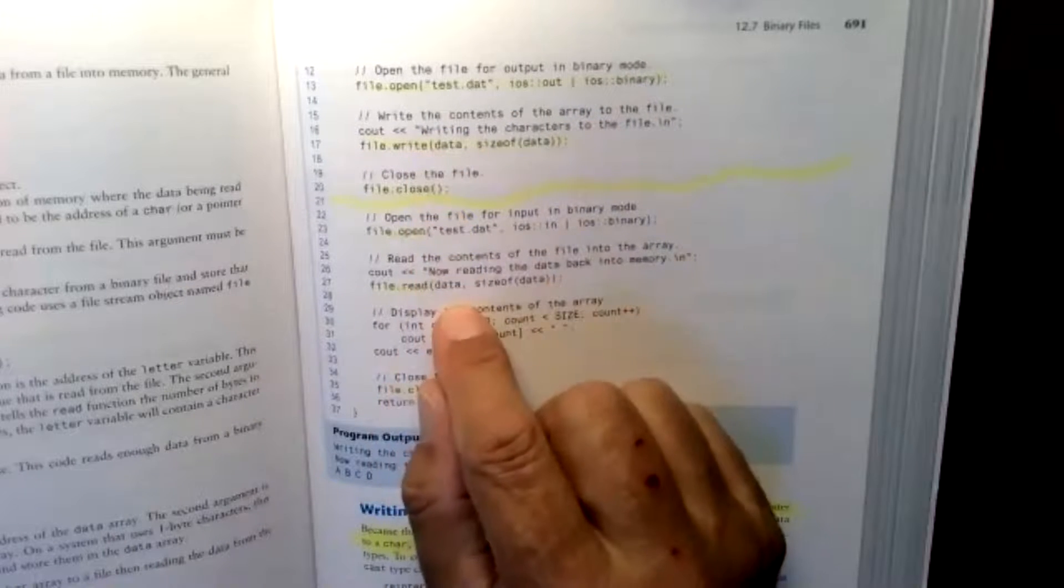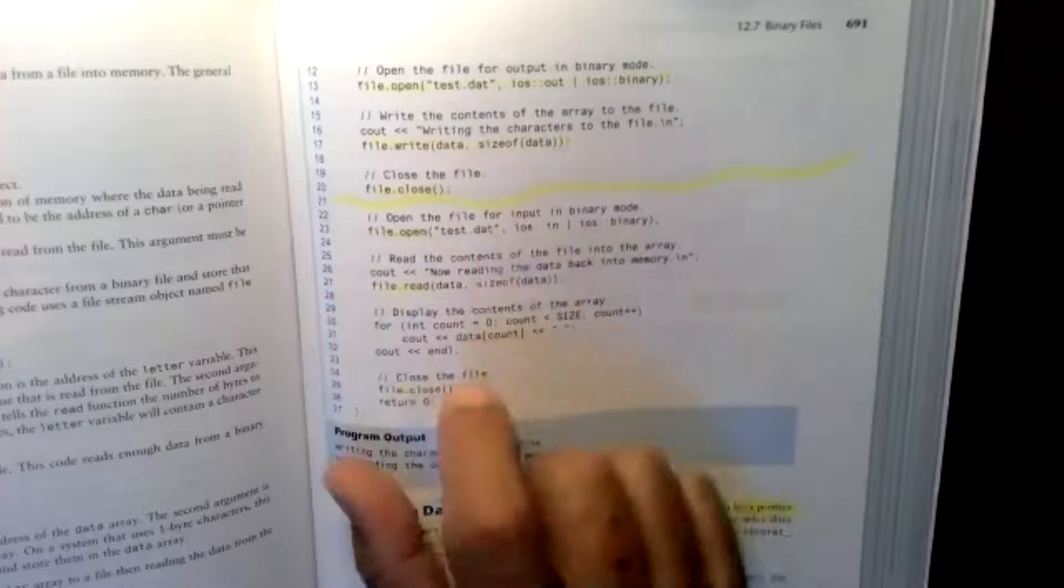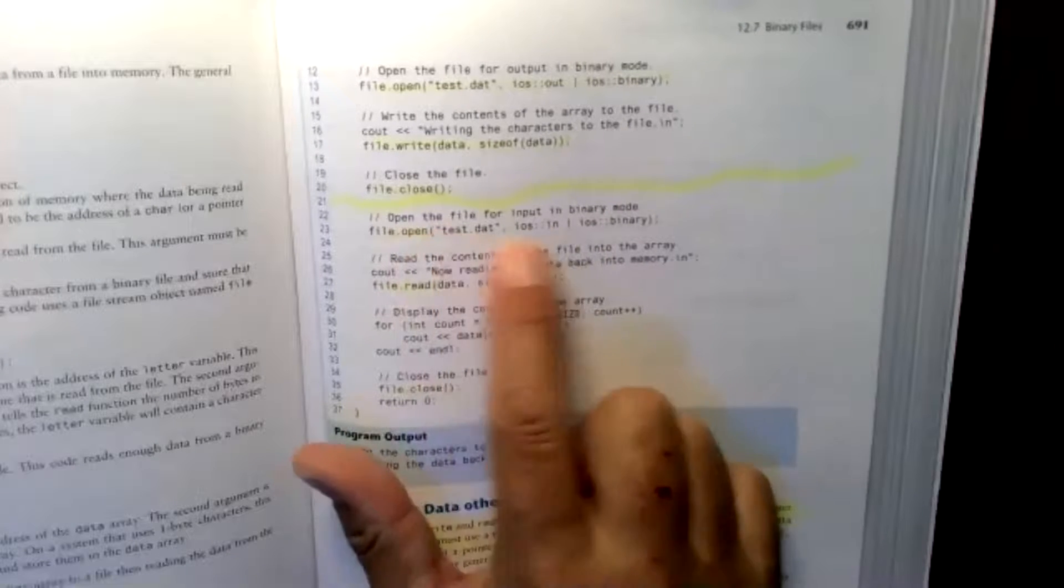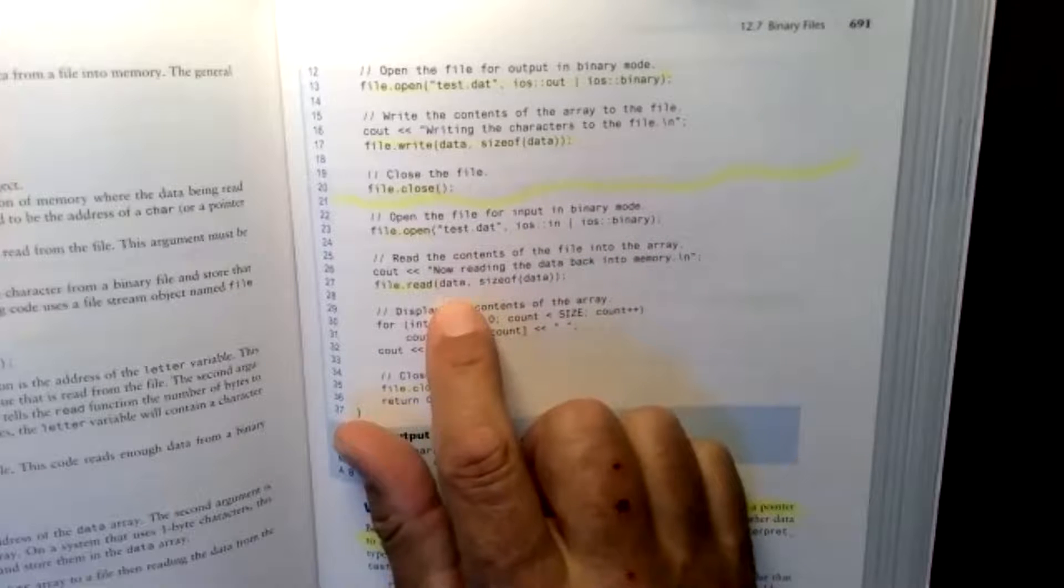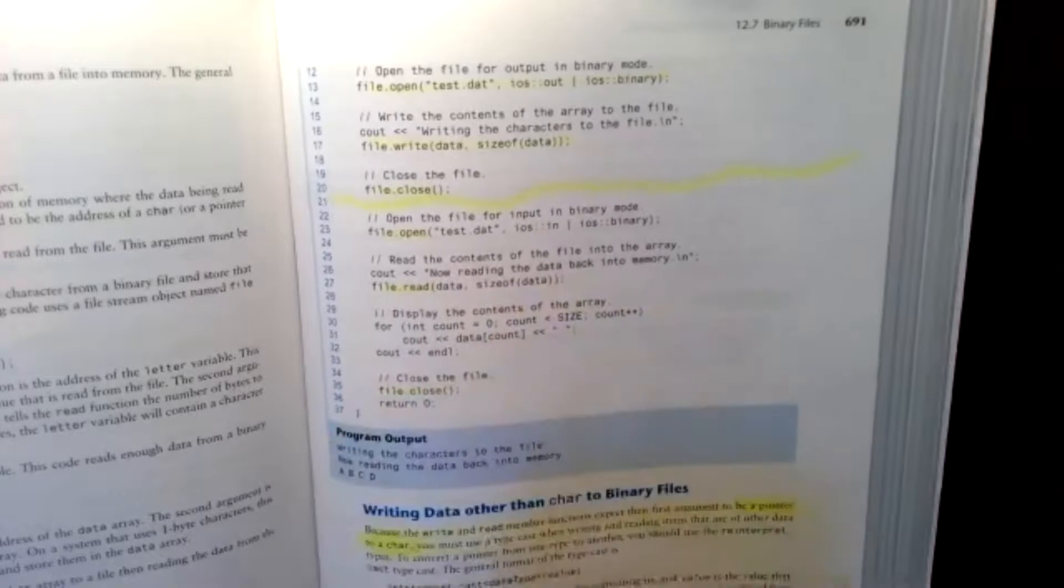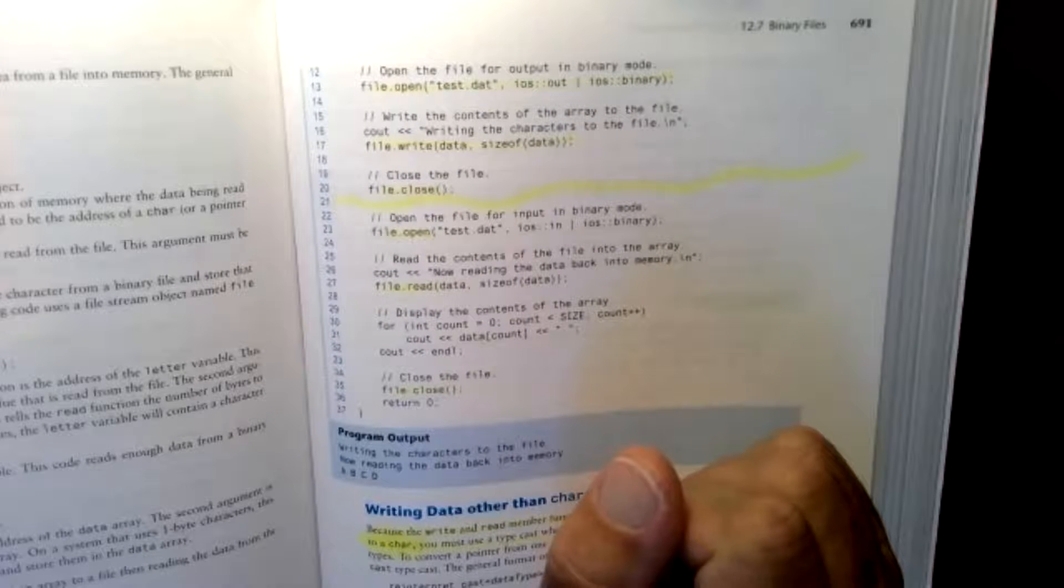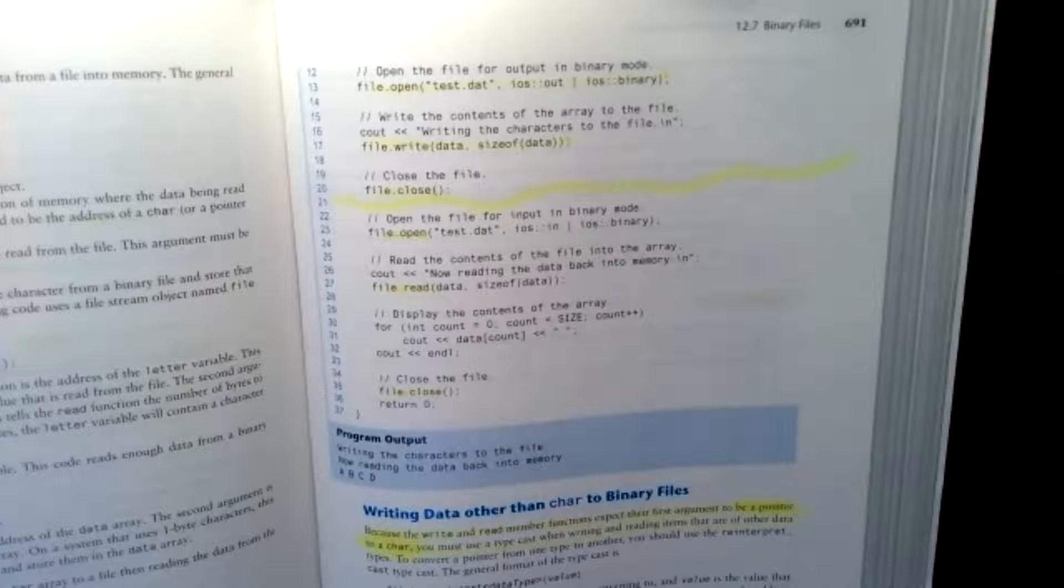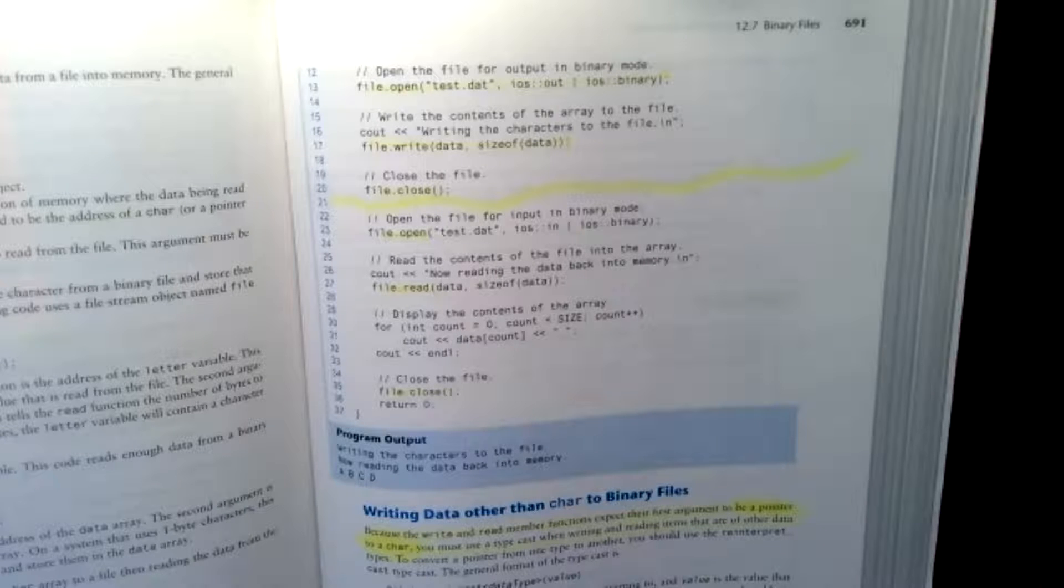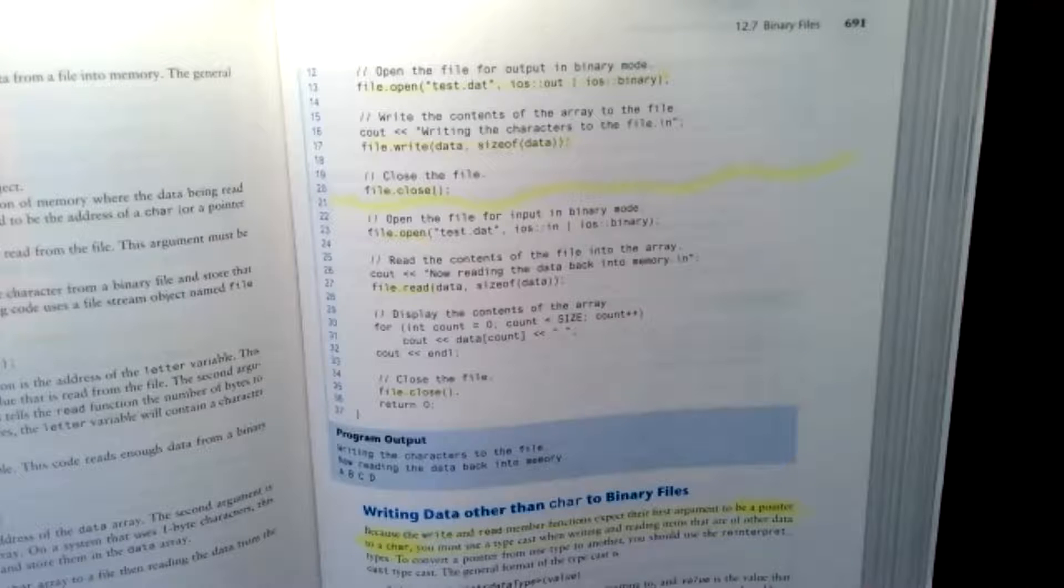When you ran code listing 1213, a test.dat file should have been created. The second part was reopening it this time for input, letting it know that it was definitely a binary file. Did anybody open up test.dat when they did code listing 1213?